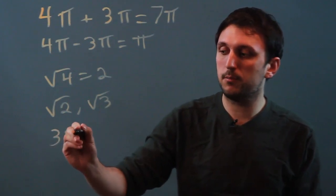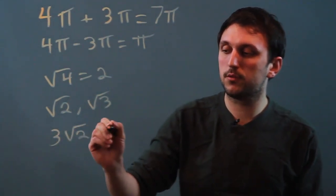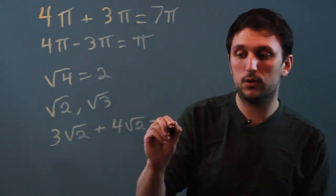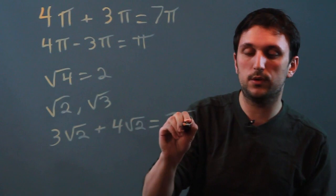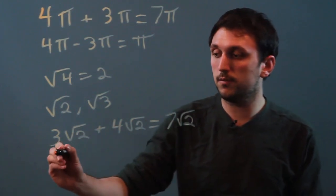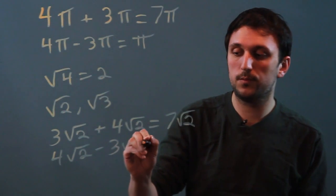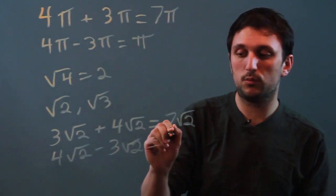So if I said 3 times the square root of 2 plus 4 times the square root of 2, that would equal 7 times the square root of 2. Similarly, 4 root 2 minus 3 root 2 equals root 2.